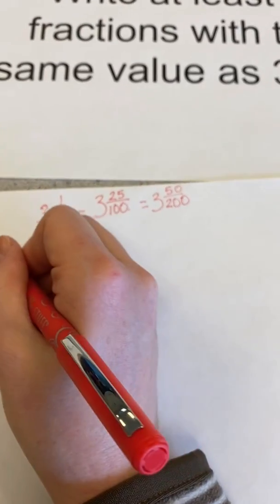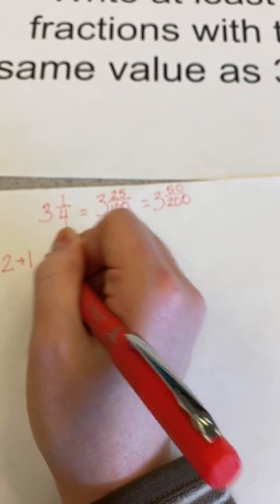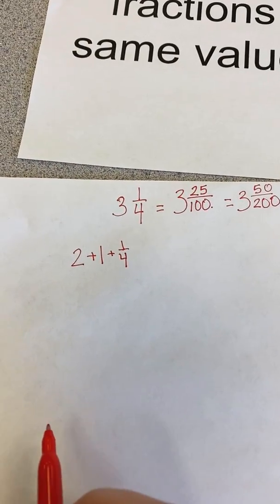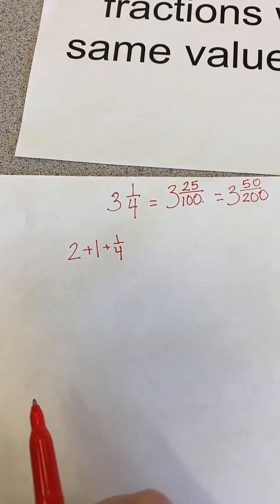I know three wholes is the same as two plus one plus one-fourth. So that could be another way to represent three and 25 hundredths.